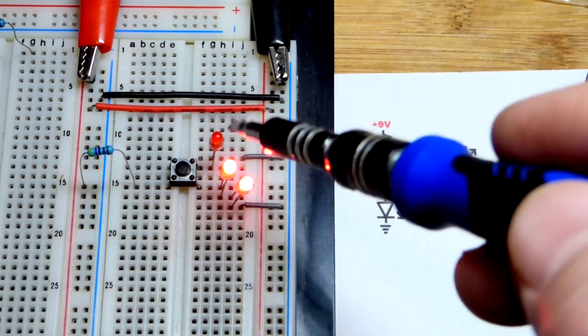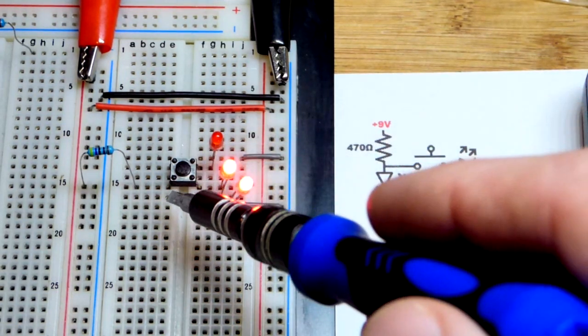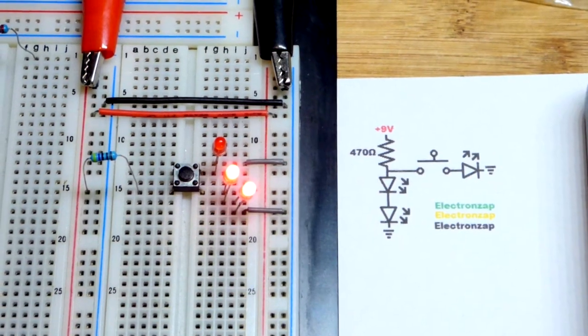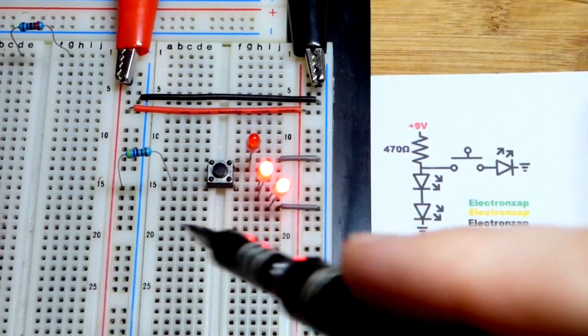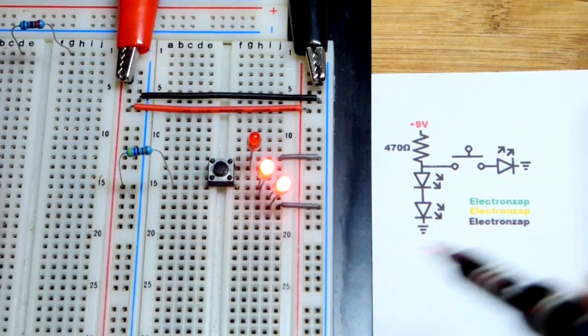The switch is open. It's basically as if that LED doesn't exist. The bottom of these push button switches are always connected right there. So we got the current going through the resistor and the two LEDs.